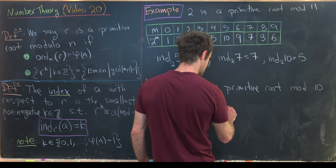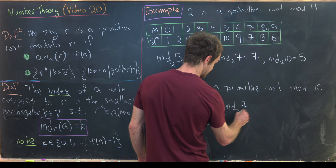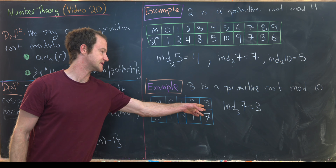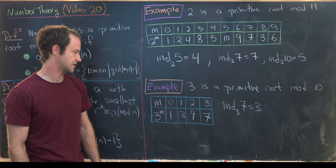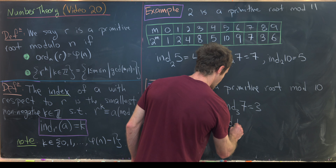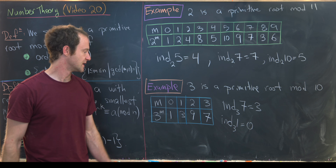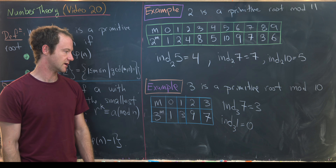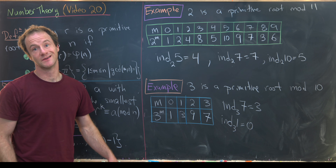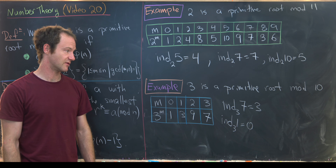From that table, the index of 7 with respect to 3 is 3, because 3^3 ≡ 7 mod 10. And the index of 1 with respect to 3 is 0, because 3^0 = 1. These give us similar index statements.